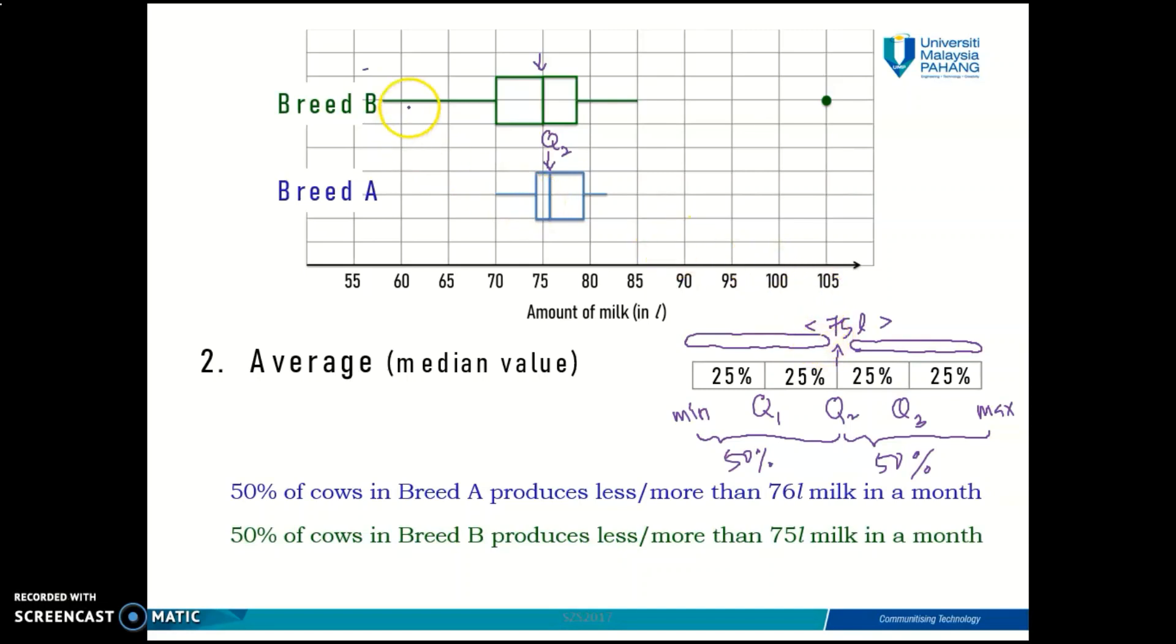I'm sure that some of you would wonder why, in the box plot, minimum to median on Breed B seems longer compared to median to maximum. But I said that this is 50 percent and this is 50 percent—why don't they have the same length? Please take note that the length of your box plot does not represent the percentage of your data. Even though this side seems longer than this side, both sides actually contain the same percentage of data.